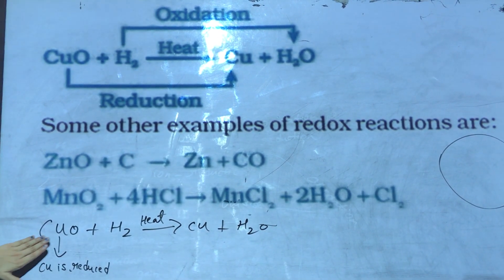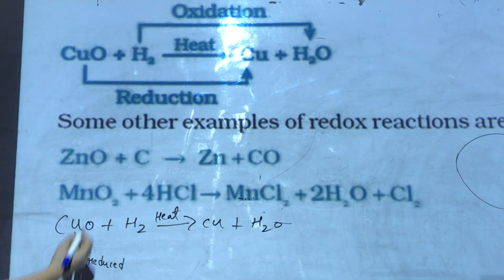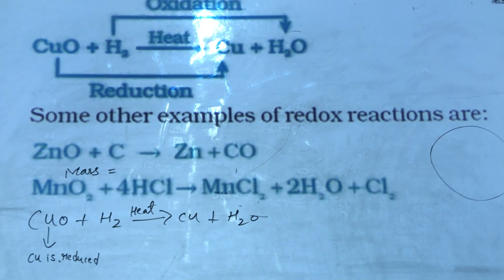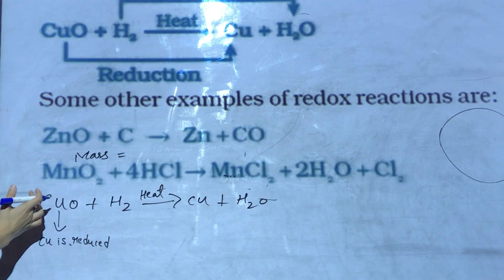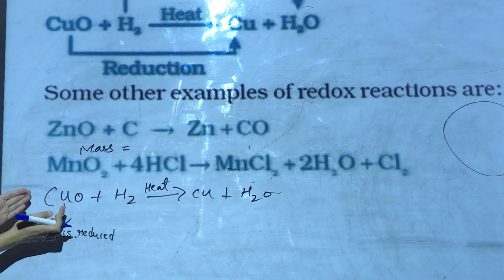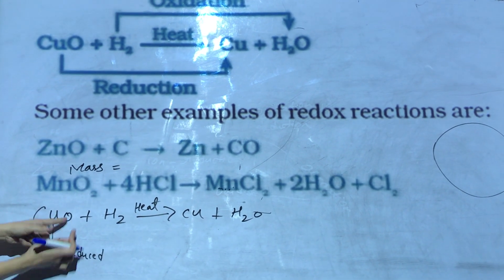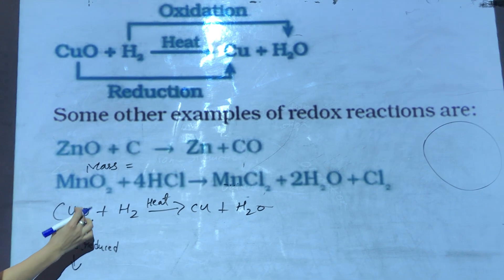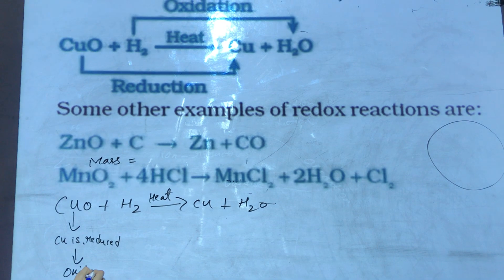Since Cu is reduced, it means that this oxygen was given to some other element. Since mass can neither be created nor be destroyed in any chemical reaction, it means that the products and reactants are equal in numbers. So since this oxygen is removed from Cu, that oxygen is going to some other element, and we will say that CuO is the oxidizing agent.